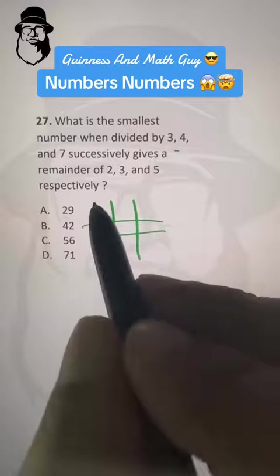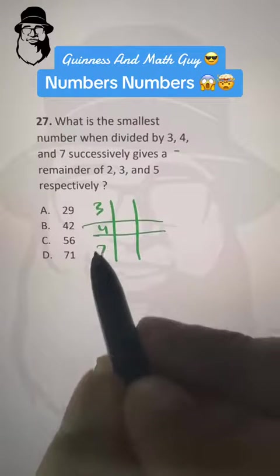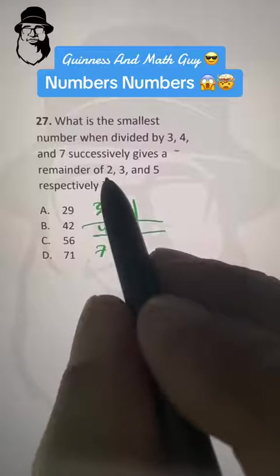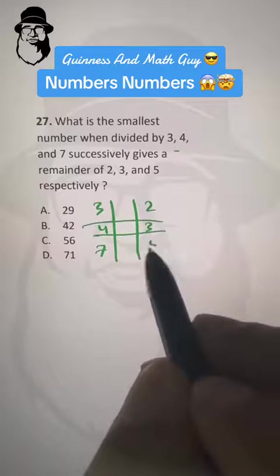Divisors are 3, 4 and 7, same. And remainders are 2, 3 and 5, right?